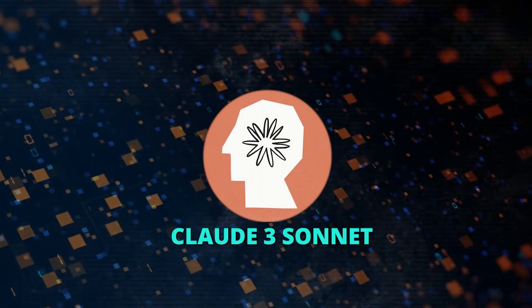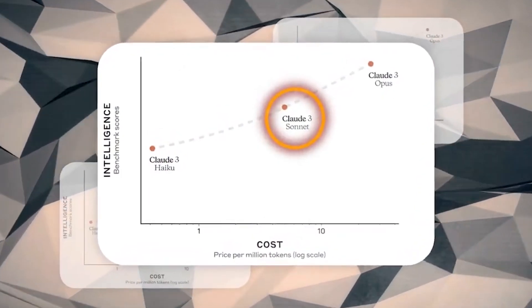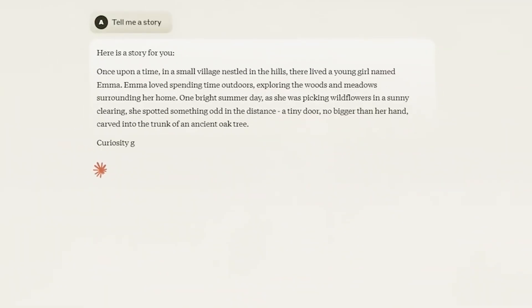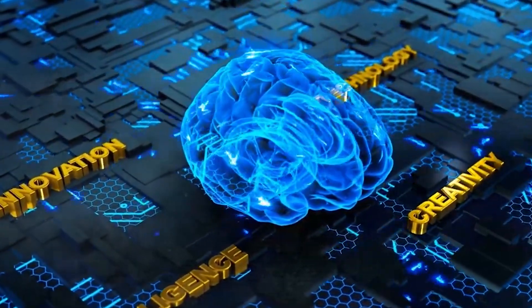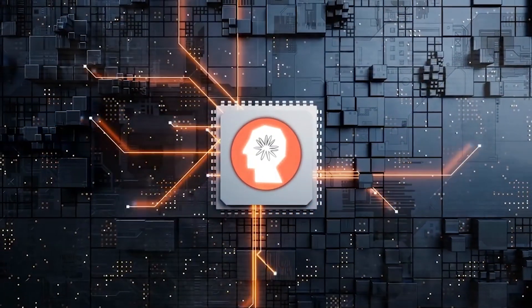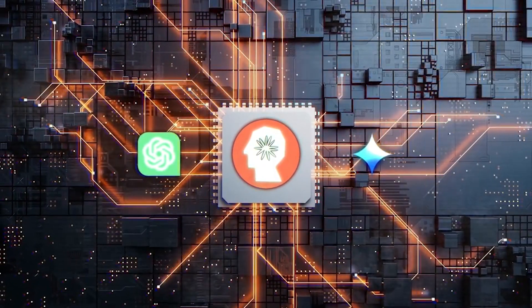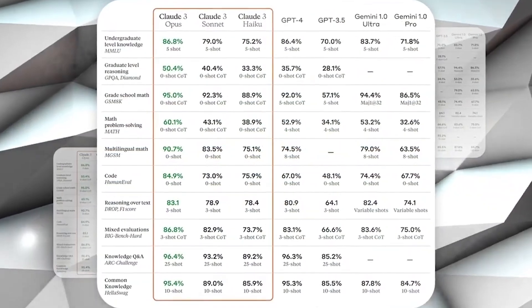So, what about CLOT3's Sonnet? Well, the Sonnet is really good at understanding and answering complex questions quickly. This makes it great for tasks where you need an answer right away, like when you're retrieving knowledge or automating sales. It's twice as fast as the previous models, CLOT2 and 2.1. But it's also smarter.